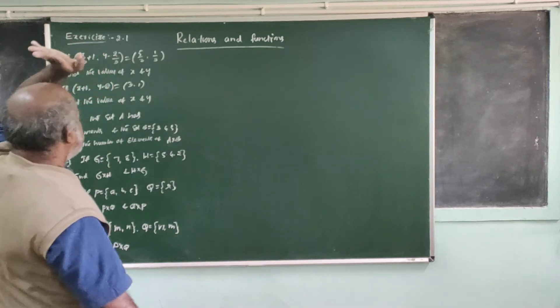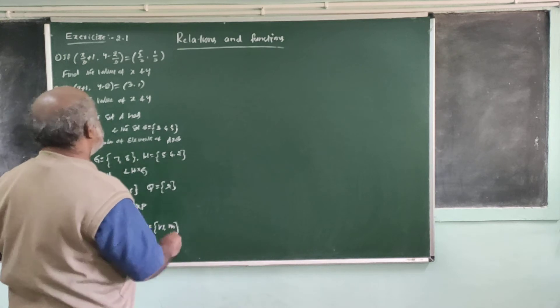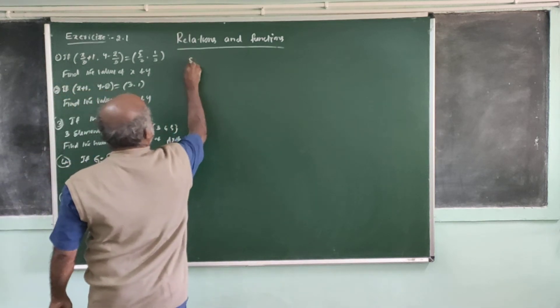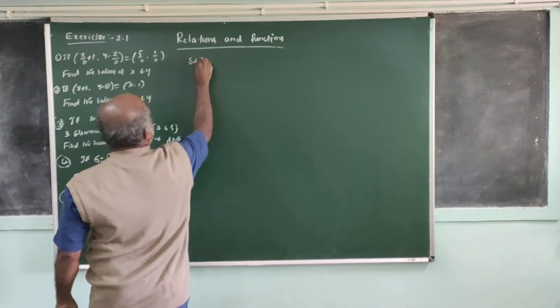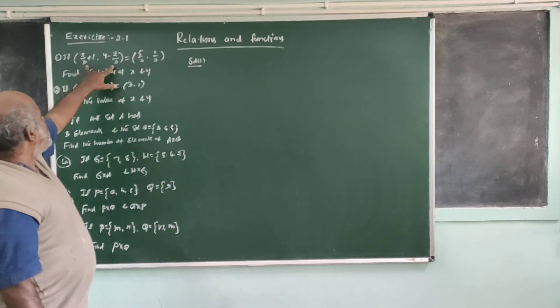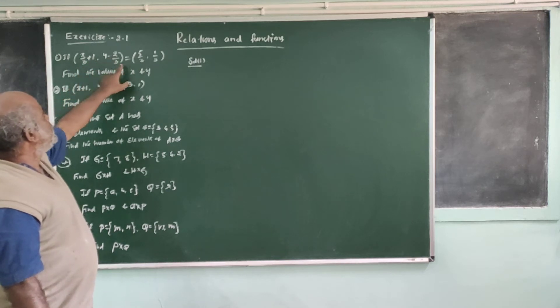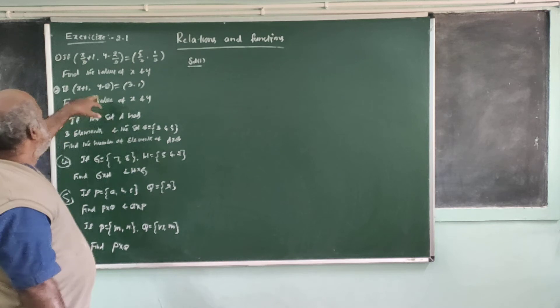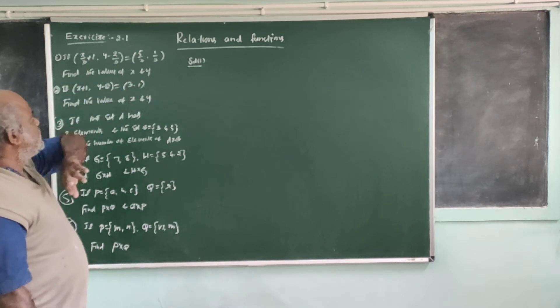Yeah, exercise number 2.1. I'm going to get a comment on that. Solution for 1. What do you think? R and R pair x by 3 plus 1, y minus 2 by 3 is equal to 5 by 3, 1 by 3. Find the value of x and y.